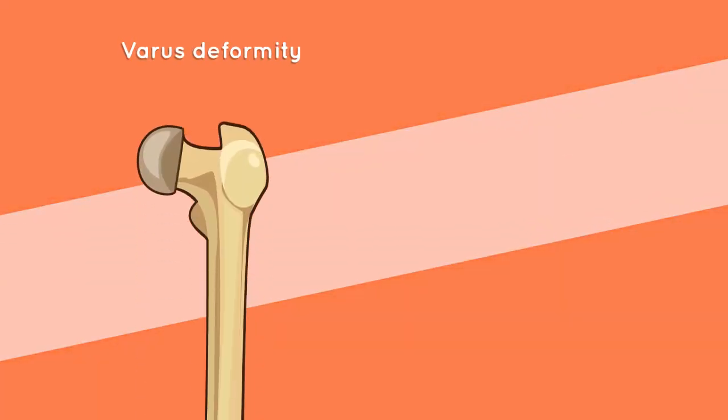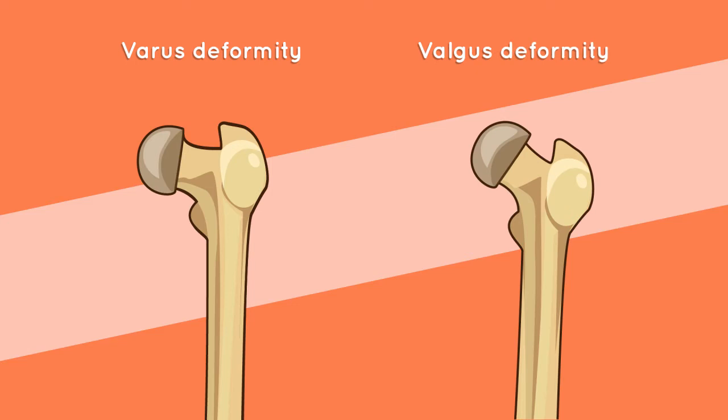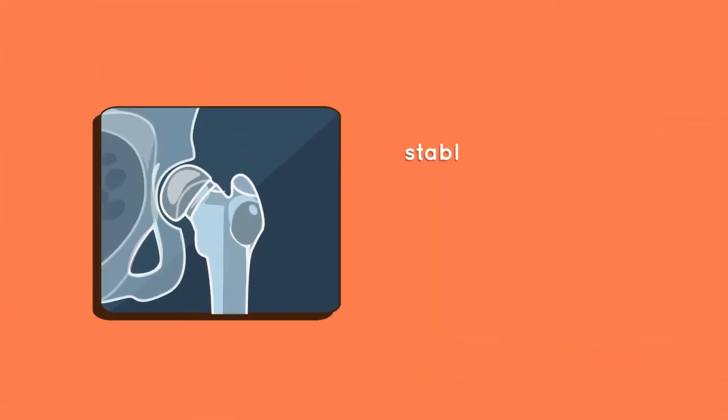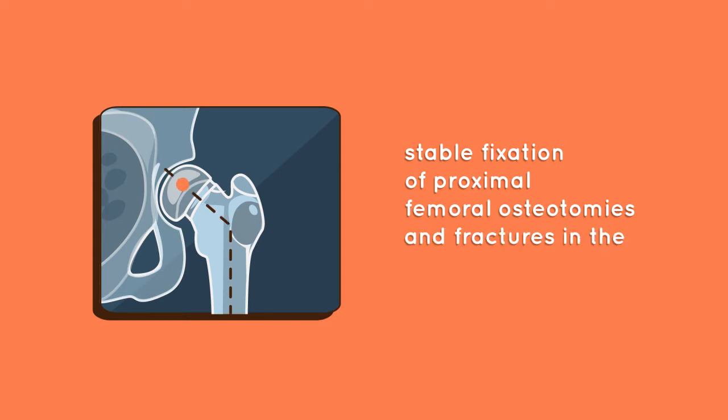The locking pediatric osteotomy plate lollipop system is a modular blade plate system intended for stable fixation of proximal femoral osteotomies and fractures in the pediatric population.